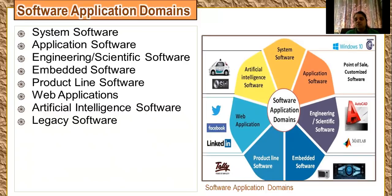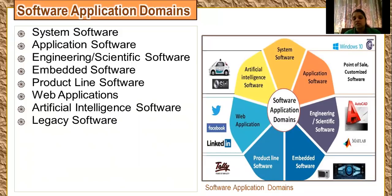Embedded software is software in which you have hardware working together with a GUI that helps make the hardware function. An example is a microwave oven. Next are product software lines — these can be word processing software or Tally, and they are always application-specific. Next are web applications such as Facebook, LinkedIn, and Twitter.